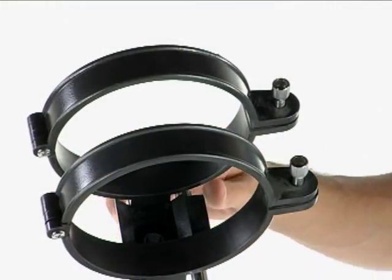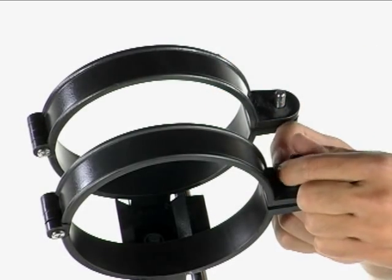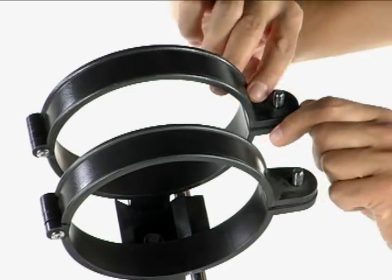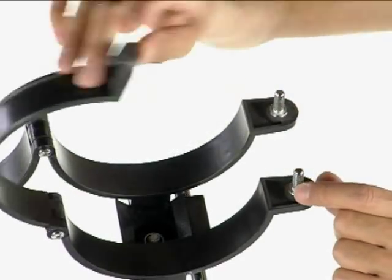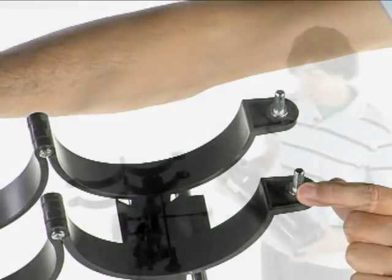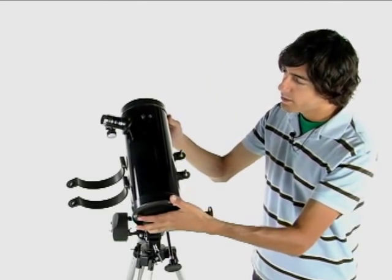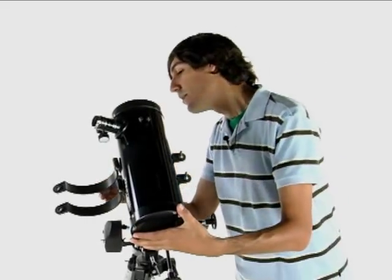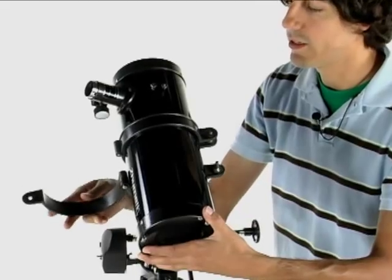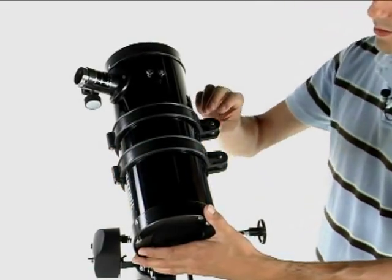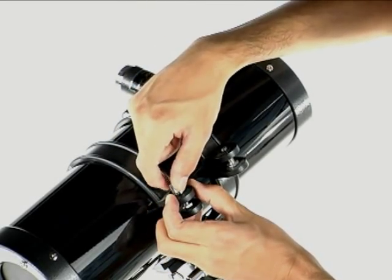Now that we have the rings connected on, we're going to remove the screws on here. And now it'll allow us to open up the rings to place the OTA inside them. And now we just connect the OTA right inside. It doesn't have to be perfect. Just close it in and you can maneuver it to where you'd like. Once you have it in, just tighten in the screws now.